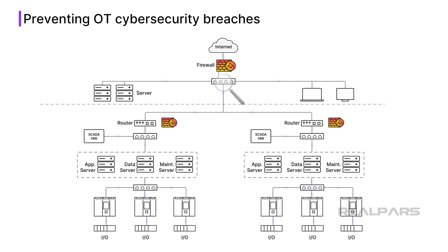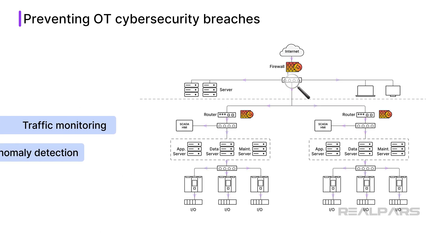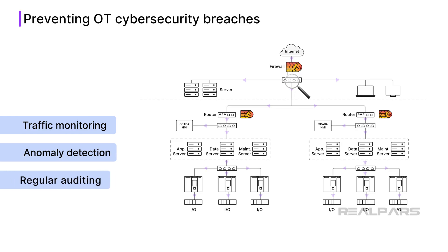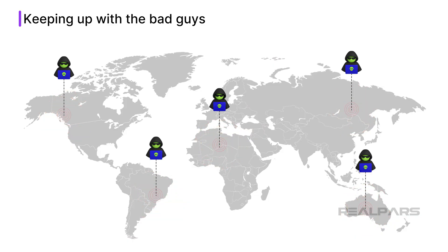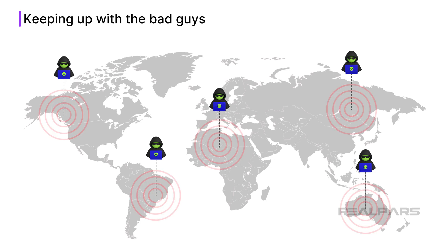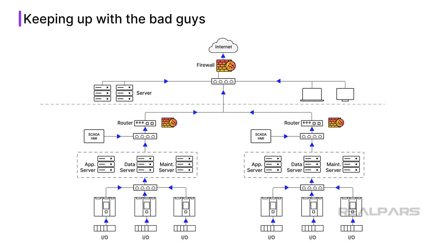Lastly, continuous monitoring and improvement are essential. Implementing traffic monitoring, anomaly detection, and regular auditing allows early detection of potential breaches and ensures ongoing alignment with security objectives. OT cybersecurity intruders are everywhere and are constantly looking for vulnerabilities in OT networks that they can exploit. Some of these actors are out to simply cause disruption, but many have very bad intentions. As the nature of OT cybersecurity threats grows, your OT networks should be evaluated and upgraded as well to meet these new threat challenges.